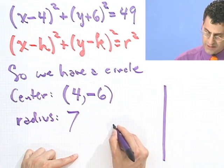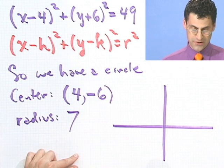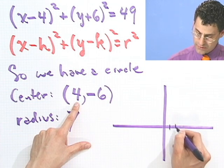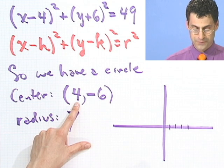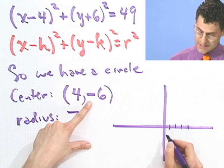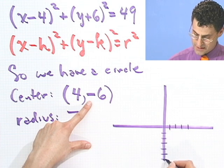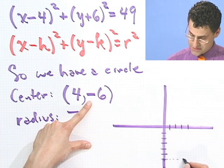So in fact, just knowing that, we can sketch a really accurate picture, or a pretty accurate picture, of what this circle would look like. Let's see if we can try that. The center would be at 4—1, 2, 3, 4. And then I go down 6—1, 2, 3, 4, 5, 6. So that's the center of the circle.